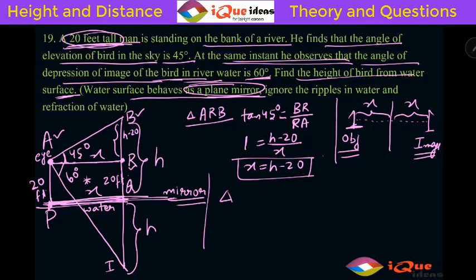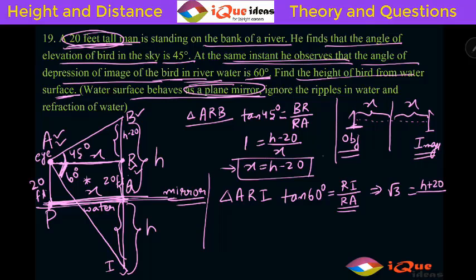Now comes the important part. Look at the triangle ARI. This is A, this is R and this is I. So look at this triangle. This angle is 60 degree. In that triangle, tan 60 degree will be equal to the opposite side to the 60 degree is RI. And the adjacent side is AR or RA. From here we get tan 60 degree is root 3 RI. Look at this carefully. RI is RQ 20 plus QI that is H. So it is H plus 20 divide by RA. We have already calculated RA is X. So this is X is this is RA. That is H minus 20.